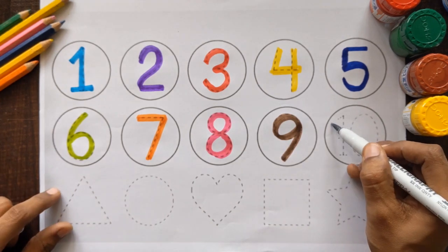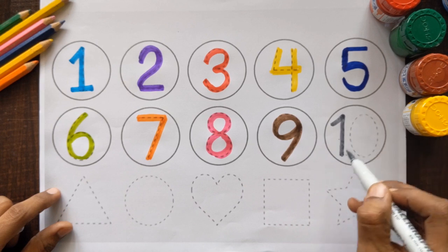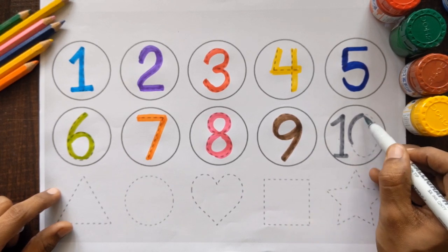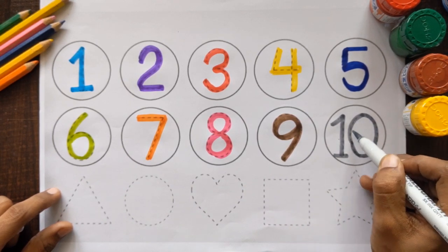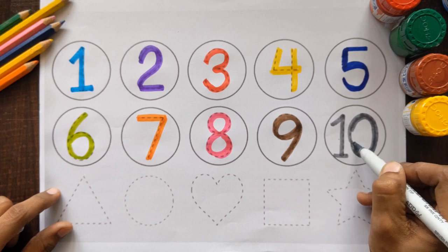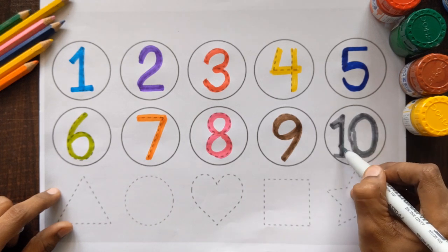And after 9, which number is this? 1, 0, 10. Number 10, gray color.